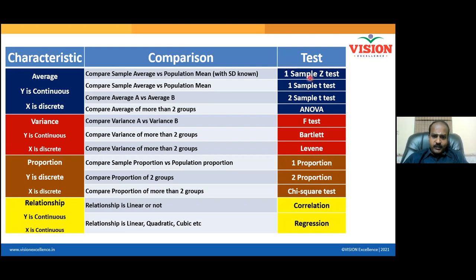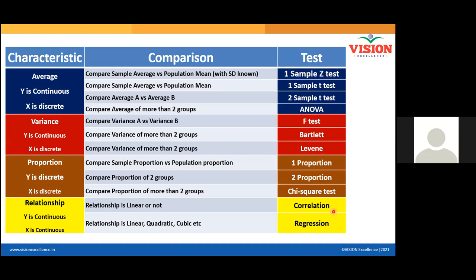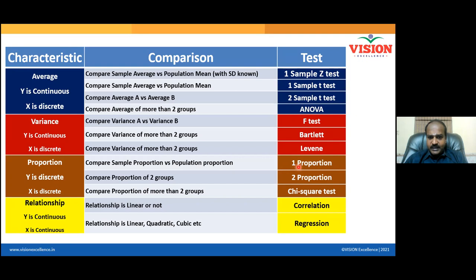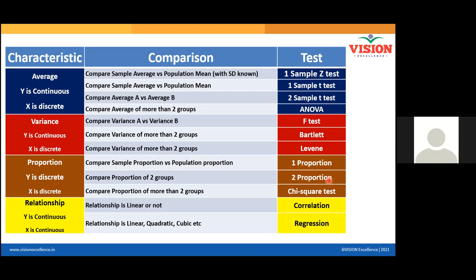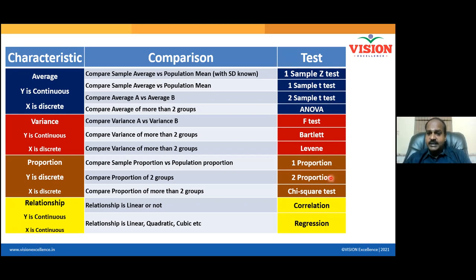When will I use the tests highlighted in blue color? When I use average. When will I use the tests highlighted in brown color? Proportion. Average — blue color test. Proportion — brown color test.